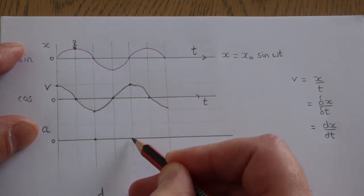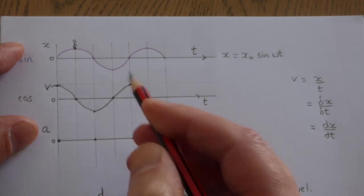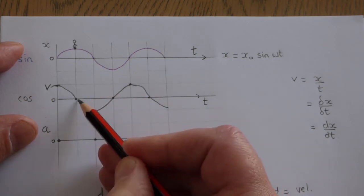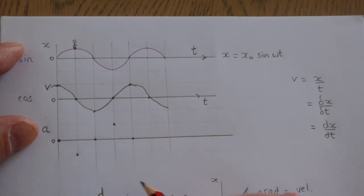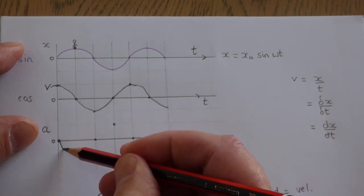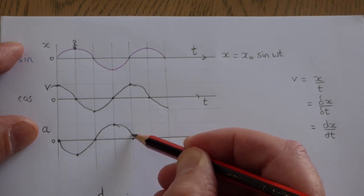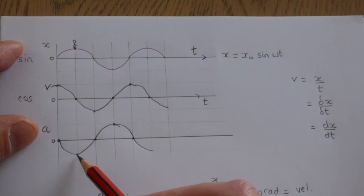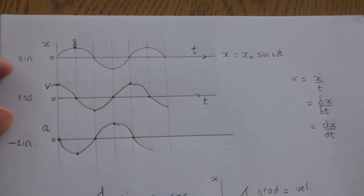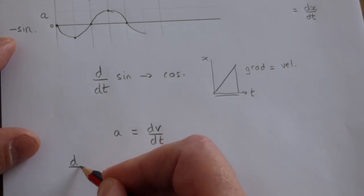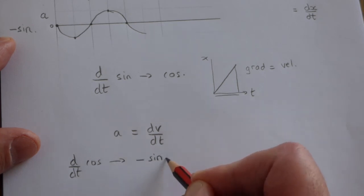For the acceleration graph: the gradient is zero at several points, so we plot zeros there. When we reach a point with a big negative gradient, we plot a large negative point; where it's big but positive, we plot a large positive point. The resulting graph starts there, comes down, and so on — it's not a standard sine curve but a negative version of one. So we argue that it's a negative sine, and in A-level maths the differential of a cosine curve is indeed a negative sine curve.